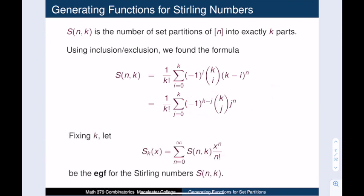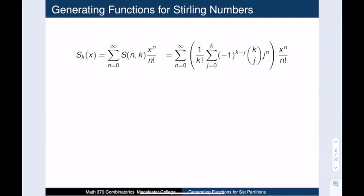We are now ready to get to work. We define the function S_k(x) to be the exponential generating function whose nth coefficient is the Stirling number S(n,k). And just as a reminder, when we have an exponential generating function, we have our coefficient times x to the n over n factorial. So let's plug in our inclusion-exclusion formula for S(n,k). We get this very intimidating expression, but never fear, we can do some reorganization and make it look much nicer.